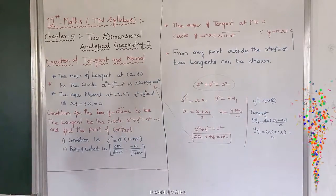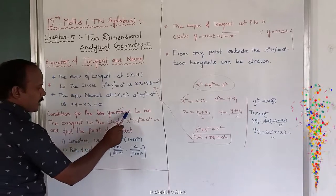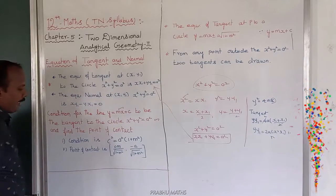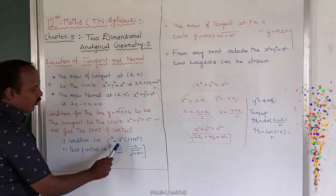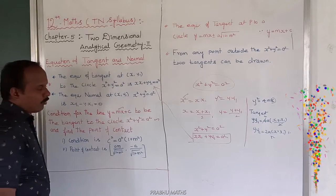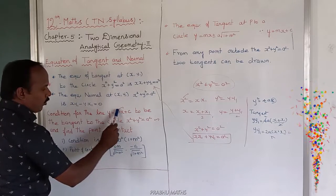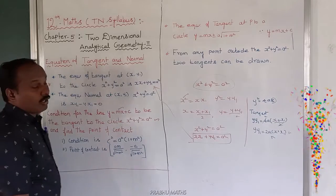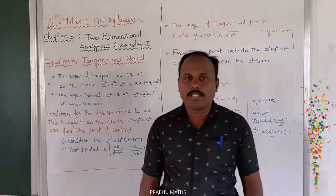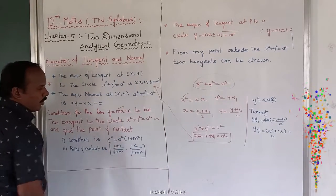Now we discuss the condition for the tangent line to touch one point on the curve. The condition for the line y = mx + c to be tangent to the circle x² + y² = a² is: c² = a²(1 + m²). Here c is the y-intercept, a is the radius of the circle, and m is the slope.